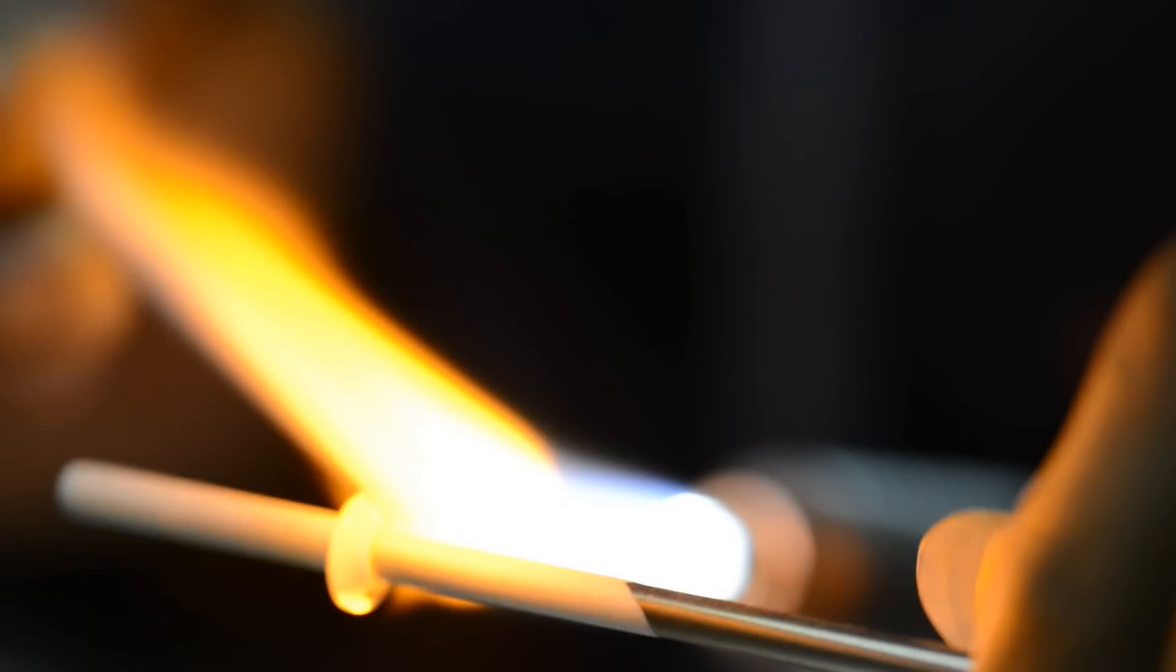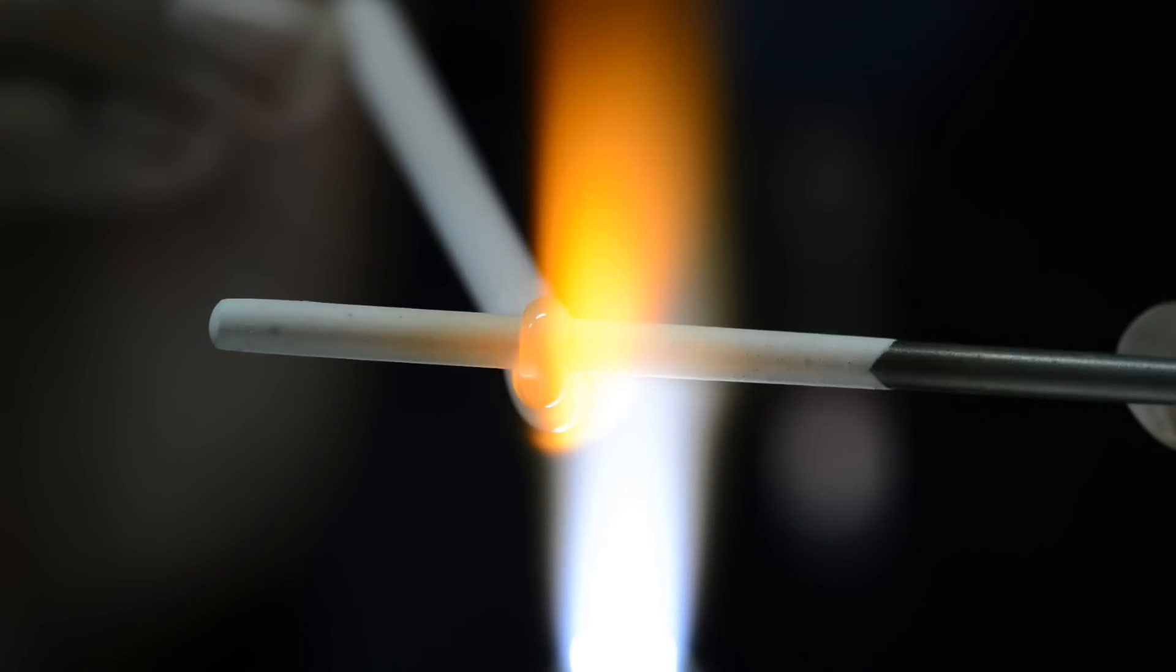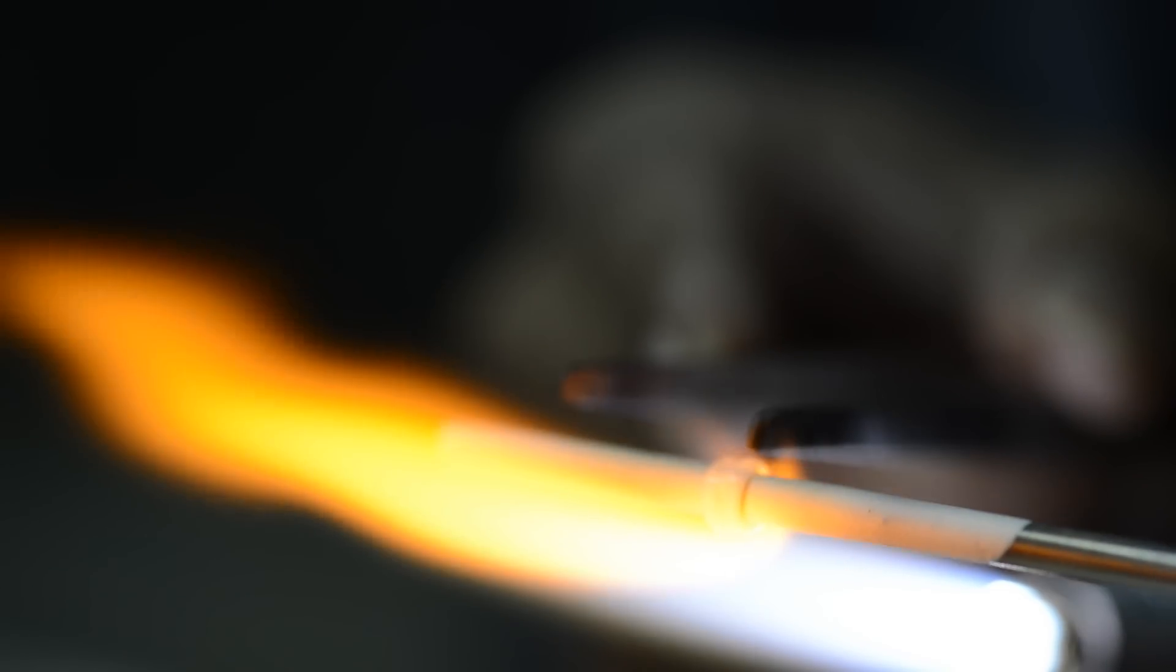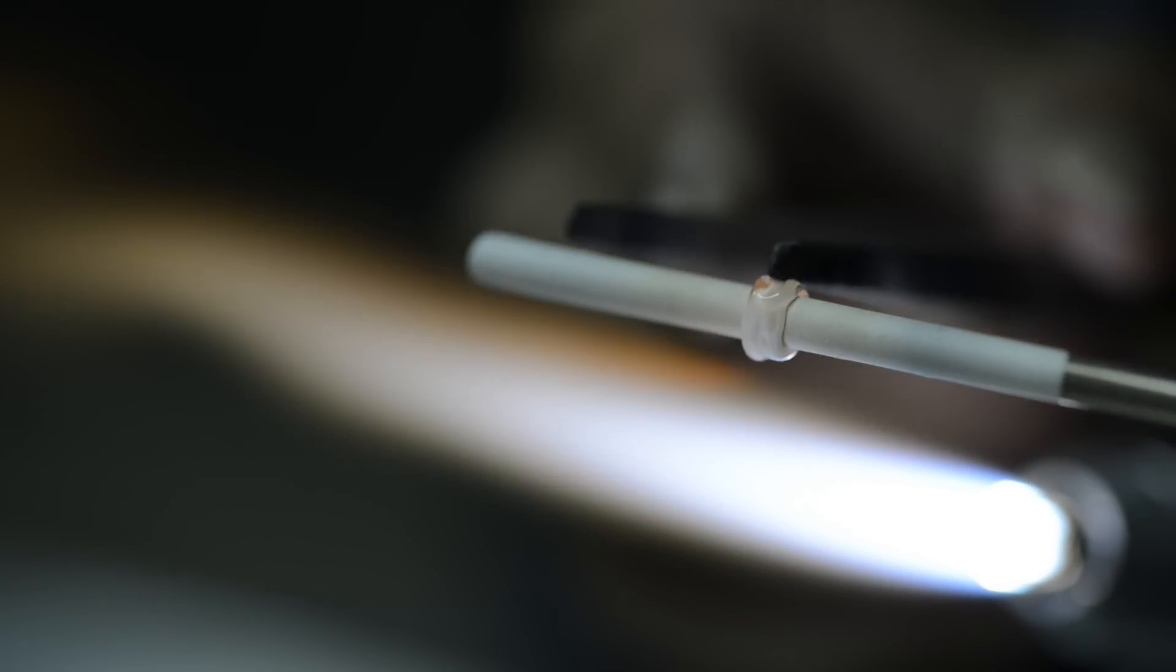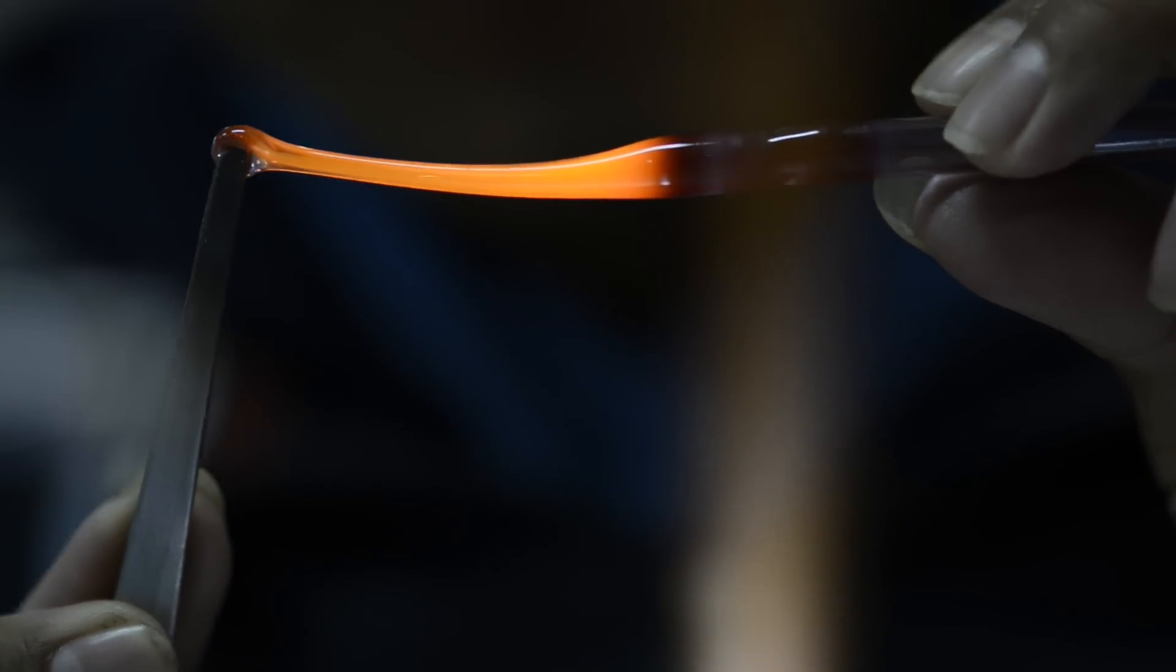Glass smelts at around 600-800 Celsius. And metal is completely different to work with. It's very cold when it's warm. But when it goes down, it's harder than metal.